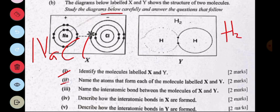Part ii: name the atoms that form each of the molecules labeled X and Y. The atoms that make up X are sodium and chlorine. The atoms that make up Y are hydrogen and hydrogen — two atoms of hydrogen. Part iii: name the interatomic bond in X and Y. The interatomic bond in X is an ionic bond and in Y is a covalent bond.